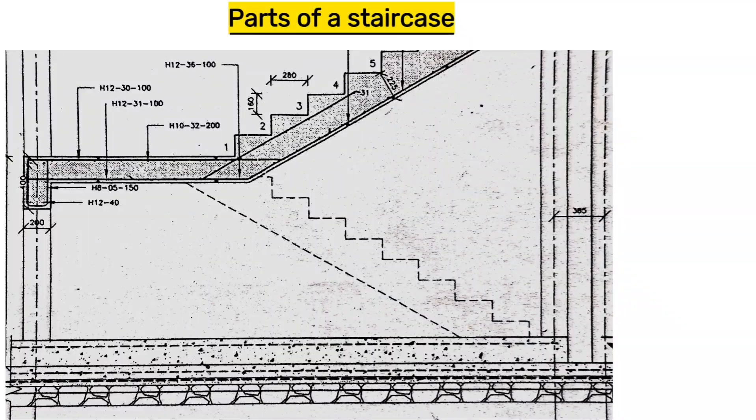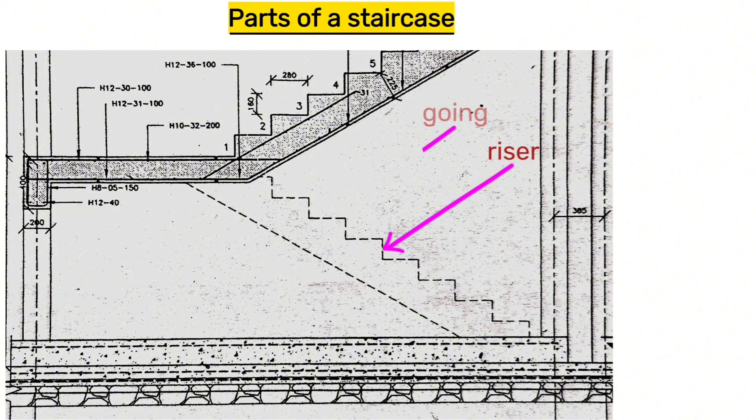A staircase has four major parts: the riser, the tread or going, the waist or ramp, and the landing.